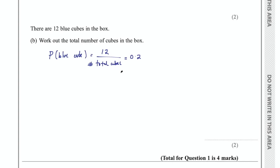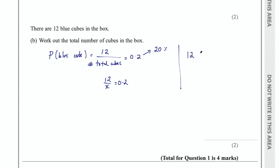Once you get to this point there are a number of things you could do. You could solve it like an equation — write it as 12 over x equals 0.2 and solve that. Or you could think of 12 as being 20% of the total. To get to 100% from 20% you multiply by 5, so 12 times 5 is 60. Similarly, solving algebraically gives x equal to 12 divided by 0.2, which is also 60. Final answer is 60 for part B.